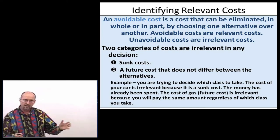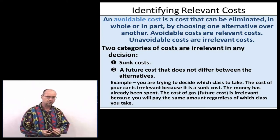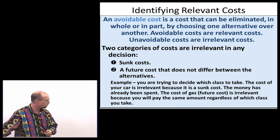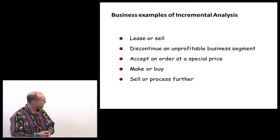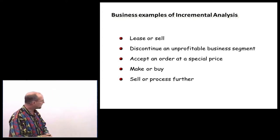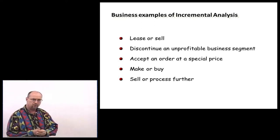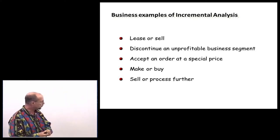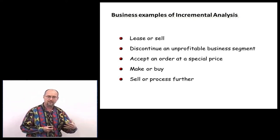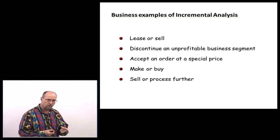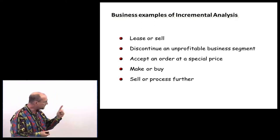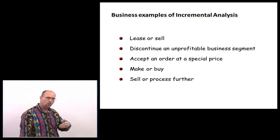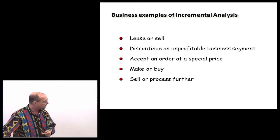Now, if the decision is between an on-campus and an online class, that's a different story — those costs become relevant. But if both classes are on campus, those are examples of irrelevant costs: sunk costs and future costs that won't differ. Here are the scenarios we're going to look at: should we lease or sell equipment? Should we discontinue an unprofitable division or product? Should we accept a special order at a special price? Should we make or buy — continue to manufacture or outsource? And should we sell now or continue processing?